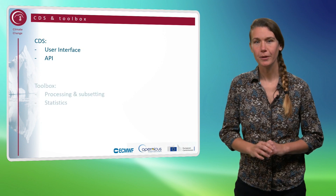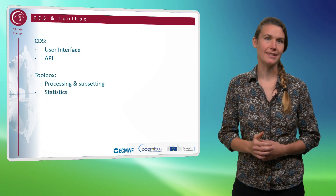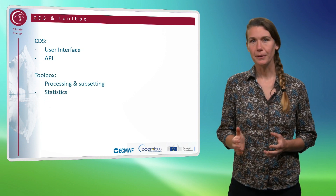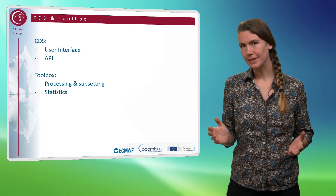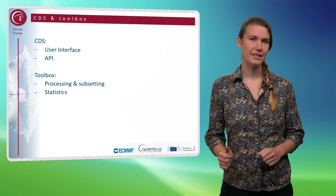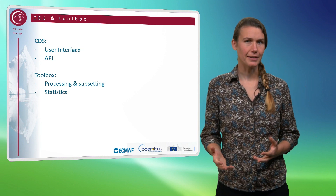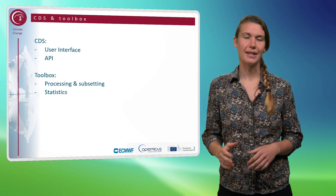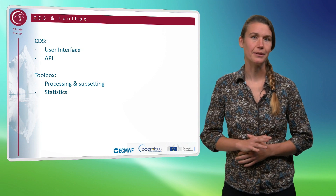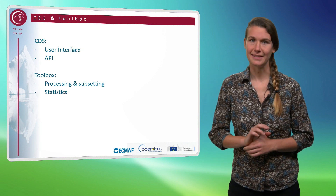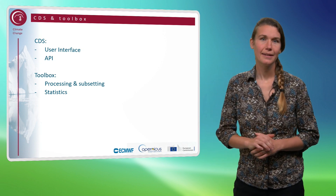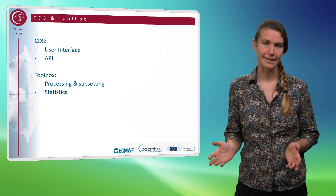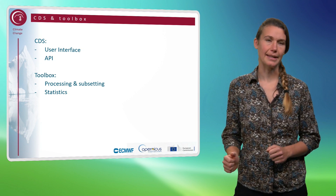The Toolbox has tools for processing and subsetting data. So if you only need data for, for example, your own country, you can do the subsetting before you download the data, which greatly reduces the amount of data you'll need to download. Similarly, there are tools to provide you with monthly or yearly statistics instead of hourly data.